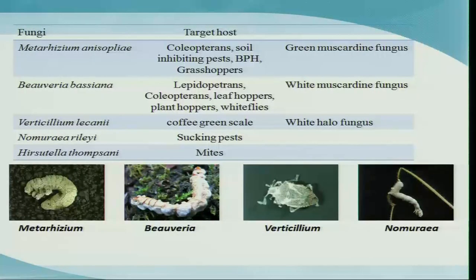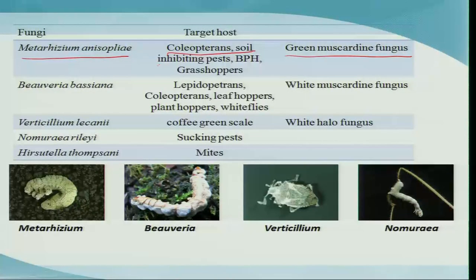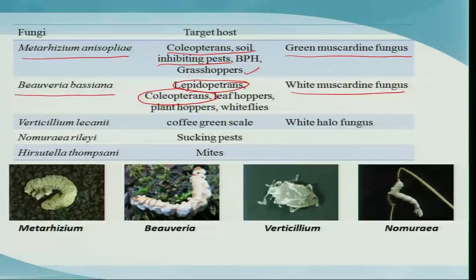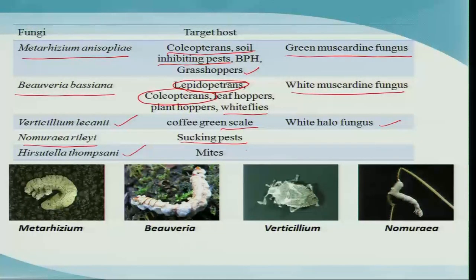There are four or five important fungal species employed in biocontrol programs. Metarhizium anisopliae, commonly referred to as green muscardine fungus, is effective against coleopterans, soil-inhabiting insects, some lepidopterans, grasshoppers, and hoppers. Beauveria bassiana, referred to as white muscardine fungus, is effective against lepidoptera, coleopterans, and some hoppers. Verticillium lecanii, referred to as white halo fungus, is effective against scales. Nomuraea rileyi affects lepidopterans and some sucking pests, while Hirsutella thompsonii is quite specific against the coconut mite.